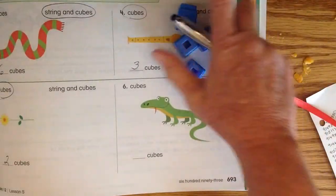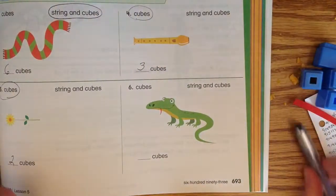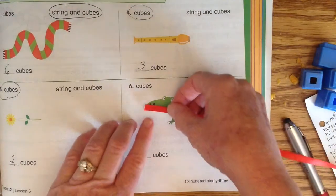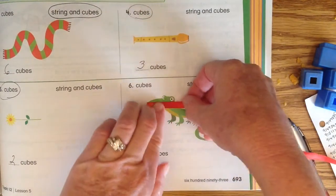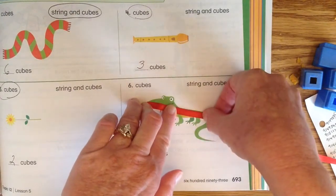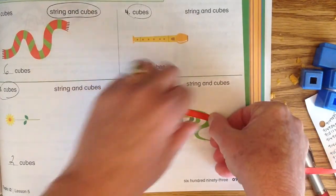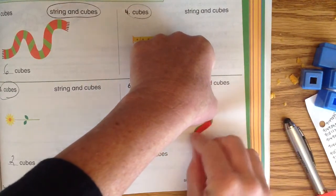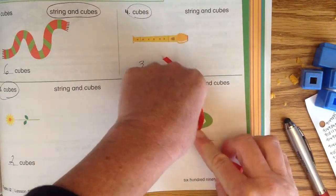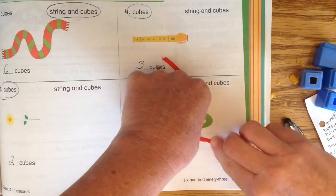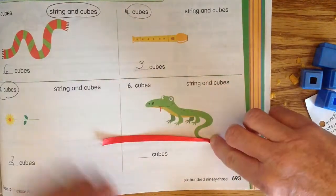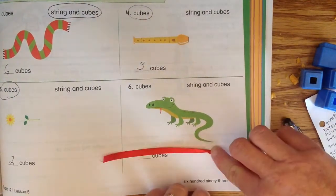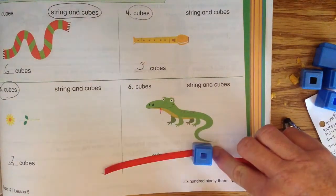Now the lizard is squiggly so we're gonna have to use both. So I'm gonna start here at the edge of the nose and curl down his body and come around his tail—this does get tricky—and then around his tail to the end. So that's about how long he is if he was all straightened out.